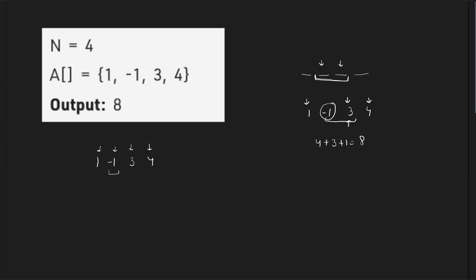The condition is: for every two elements, I have to take one of them. When you start traversing the array, let us say we are moving from right to left. If I have taken the current element and come to the next position, since I have taken the previous element, I have the choice to take this element or skip this element. But if I did not take the previous element, I do not have a choice — I will have to take the current element.